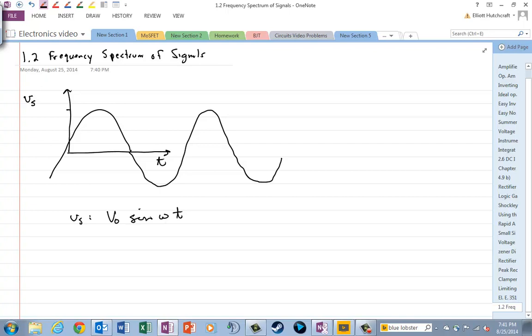And our Vs may be V0 sine of omega t. So V0 would be the amplitude, and so if this is zero here, then the amplitude is V0.